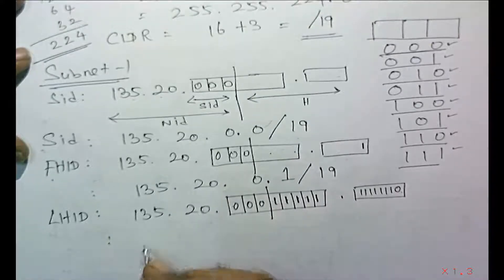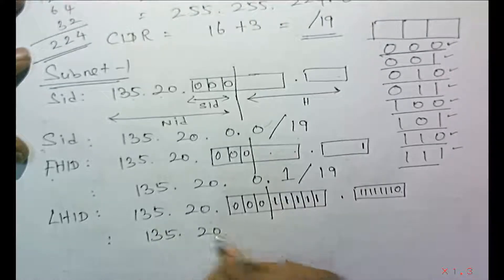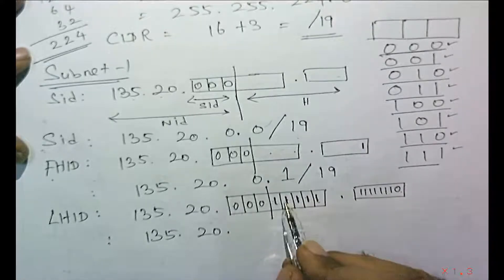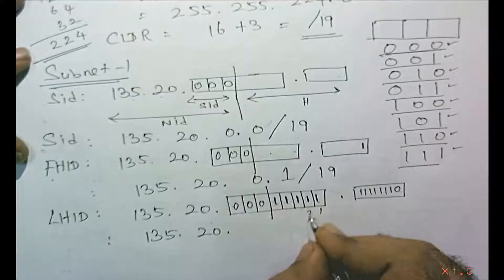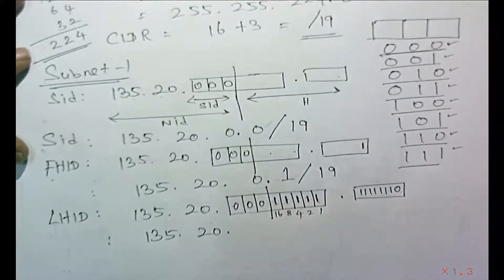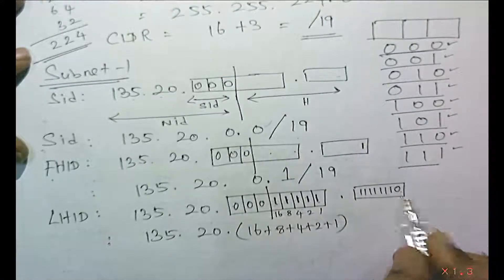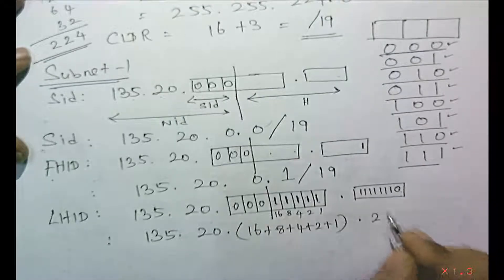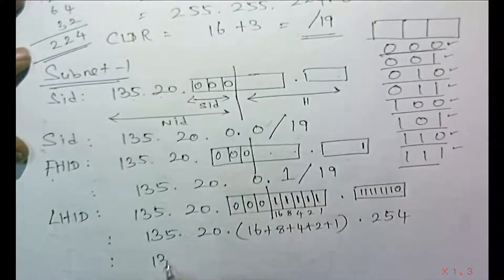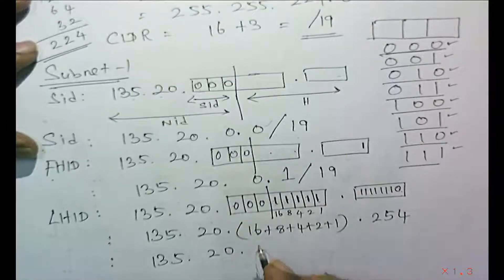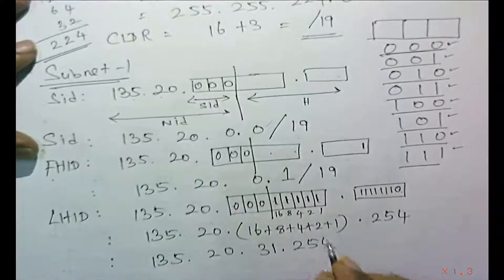Converting to decimal: 135.20. For the third octet, 16 + 8 + 4 + 2 + 1 = 31. For the fourth octet, all bits are 1 except the last, so 255 - 1 = 254. The last host ID is 135.20.31.254/19.